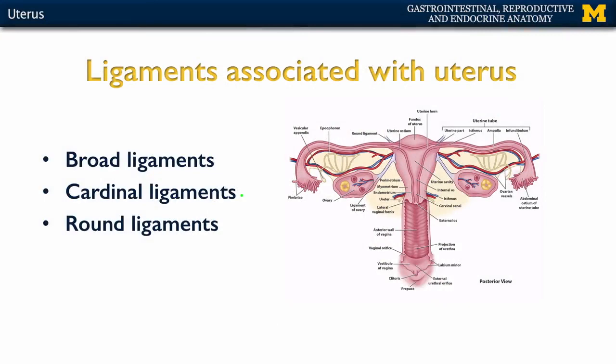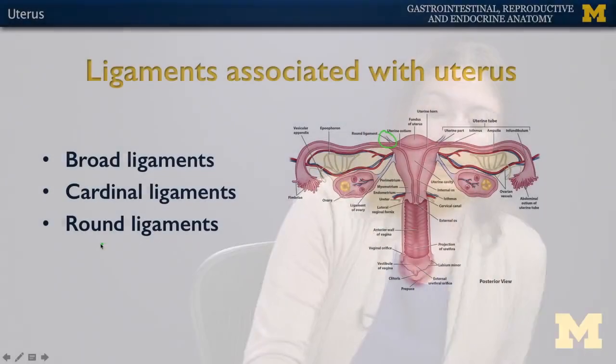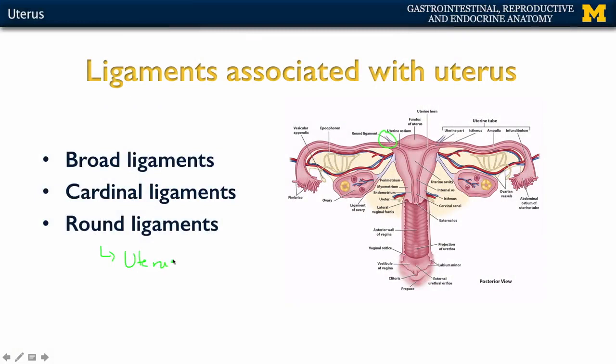Lastly, we have the round ligament, which you can see right here. The round ligament, like the ovarian ligament we discussed previously, is a remnant of the gubernaculum. The round ligament is an attachment of the uterus all the way to the labium majora — important for keeping it tethered in that region. You have enough flexibility for the uterus to move some, particularly with the filling of the bladder, but enough to keep it in place, particularly during pregnancy.